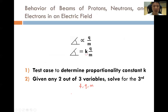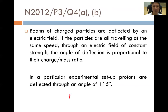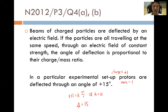Using the test case to find k: the angle of deflection of 15 equals k multiplied by the charge of protons, which is plus 1, over the mass of the proton, which is also 1. Therefore k is equal to 15. We now have the relationship: the angle of deflection equals 15 multiplied by the charge over mass ratio.